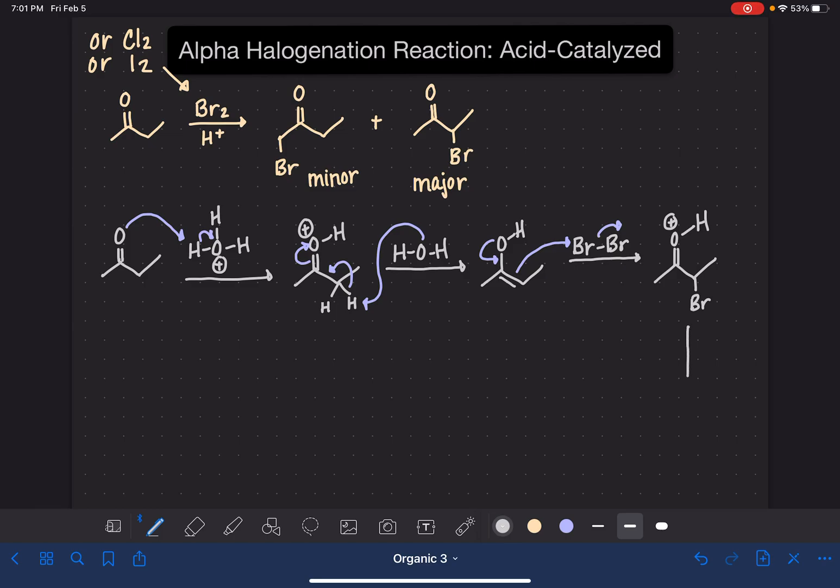All that needs to be done is just deprotonating that oxygen. So we'll use another water molecule for that step. Grab that last hydrogen. And this is just the major product. And if we wanted to draw the mechanism for the minor product, we'd do pretty much the same thing. But in this step right here, we'd be grabbing one of the hydrogens from the other alpha carbon.